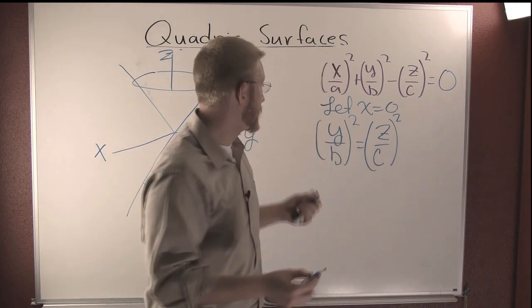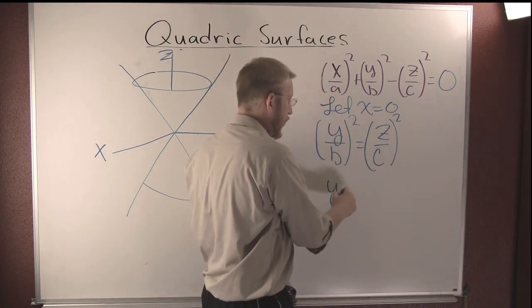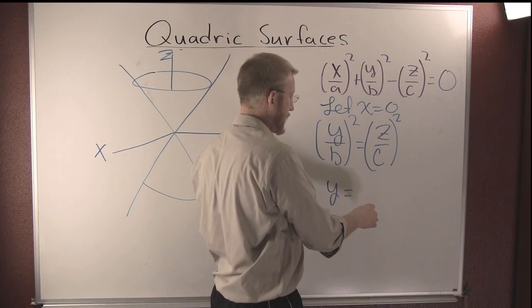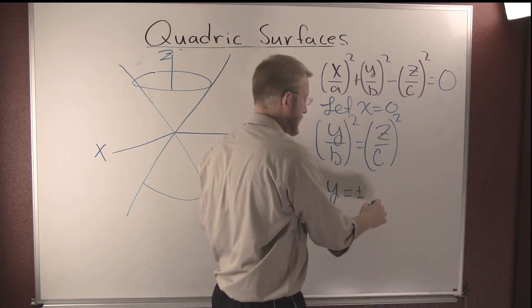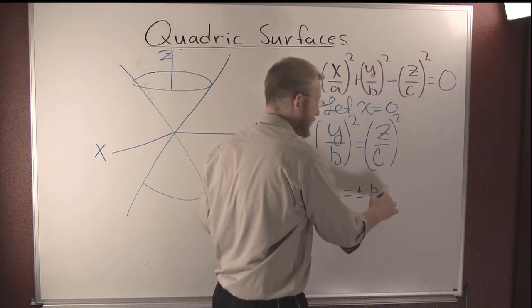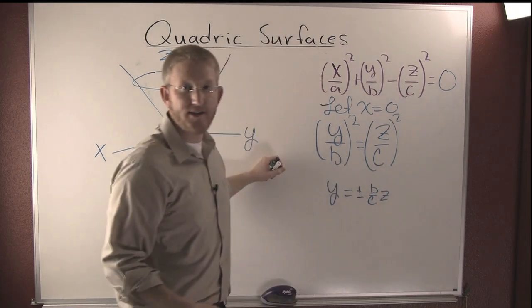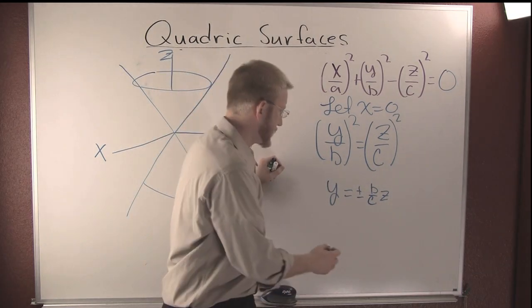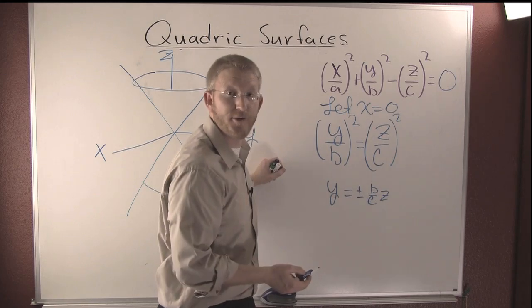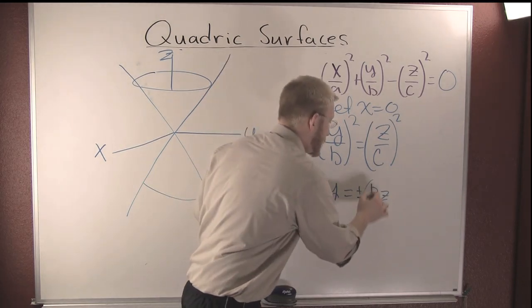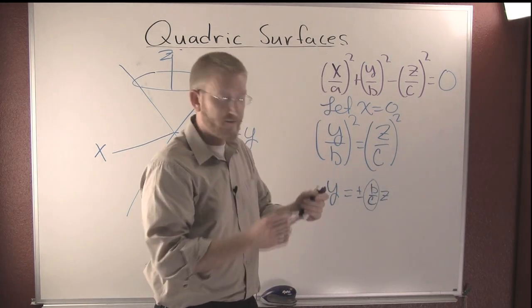Take the square root of both sides, and you end up with y equaling plus or minus b over c times z. What are these guys? They're lines. They're lines passing through the origin and having slope b over c.